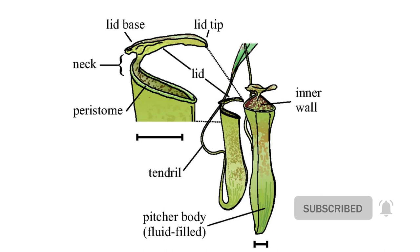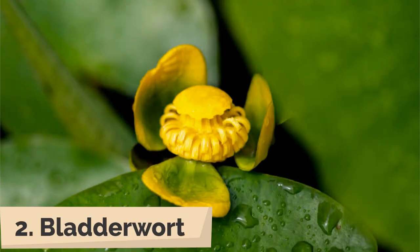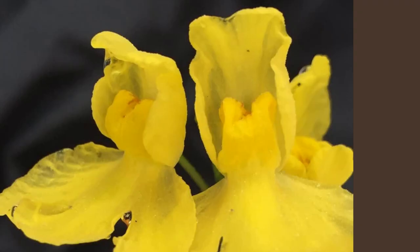Once an insect enters the pitcher through the opening, the lid closes and the insect gets digested by the juices released by the leaf. Bladderwort leaves are highly segmented to form tiny bladder-like structures that have a trap-door entrance. Organisms that enter through it cannot exit — they get trapped inside and get digested.